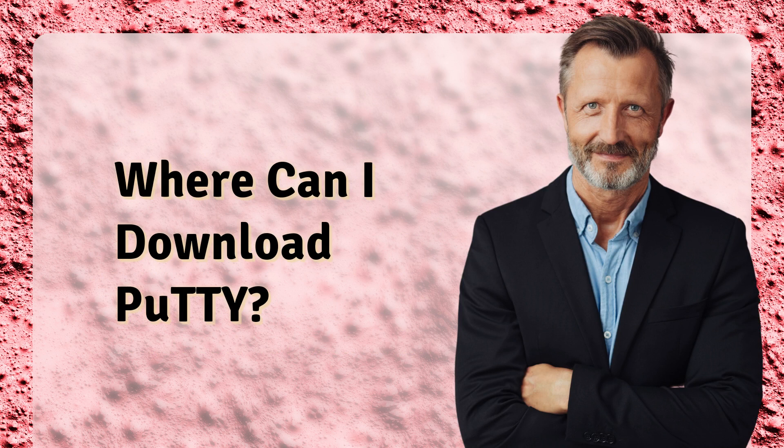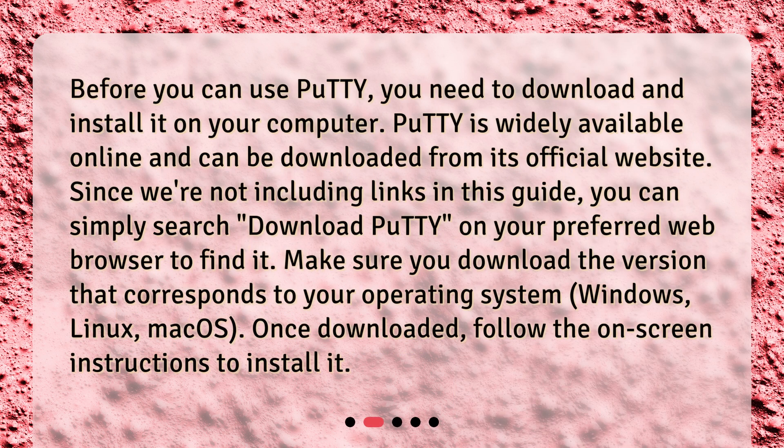Before you can use PuTTY, you need to download and install it on your computer. PuTTY is widely available online and can be downloaded from its official website. You can simply search "Download PuTTY" on your preferred web browser to find it. Make sure you download the version that corresponds to your operating system — Windows, Linux, or macOS. Once downloaded, follow the on-screen instructions to install it.